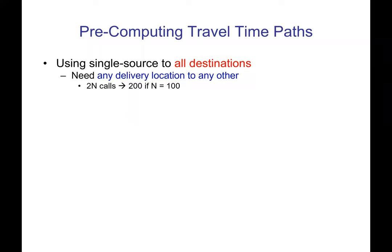If we use that single-source to all-destinations algorithm, we're only going to have to call it two N times if we had N pickups and deliveries. So that's not too many — 200 for a pretty big case. We're also going to need to call it a few more times for the depots — from any depot to any delivery location. So your depot is another possible source, a start point basically.